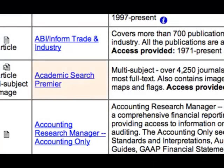The first is Academic Search Premier. As you can see, it's a multi-subject database that contains journals and magazines.